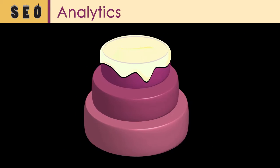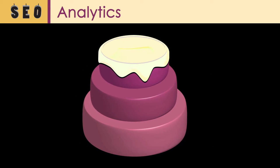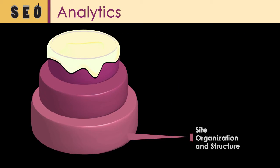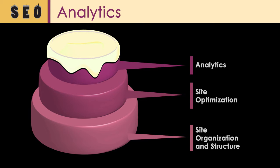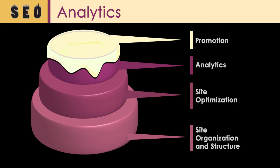If you think of SEO as a three-layer cake, the layers would be site organization and structure, then site optimization, then analytics. Finally, the finishing touch, or the frosting, would be promotion that includes, among other things, social media, blogging, and paid ads.